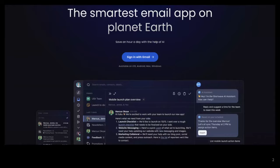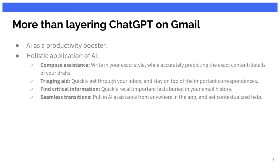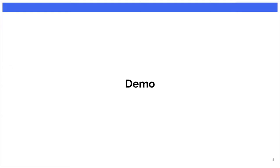To get there, there are at least a couple of things we need to accomplish. One is to have a very AI-focused product that looks at AI as a true productivity booster, not just a fun and cool novelty. And secondly, to apply AI holistically everywhere throughout our app — from compose assistance to reading aid, and finding critical information that's buried deep down in your email history. We also provide a seamless integration with AI through our AI assistant, which is an experience you can pull into practically any UI, any screen in the app, and get contextualized results.